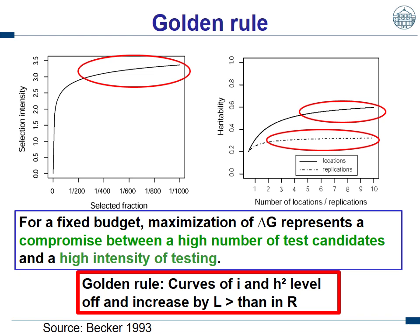I would define a golden rule. The most important thing, having selection intensity and heritability in mind, is that the curves of them level off. The increase is not linear. In the flat region, only large increases in number of lines deliver small increases in selection intensity. While in the steep region, each change in the number of lines will tremendously increase or decrease your selection intensity — so if possible, avoid the flat region. Similarly for heritability: assuming fixed costs and that a replication costs as much as another location, the use of unreplicated trials is always optimal — it's just a matter of budget.